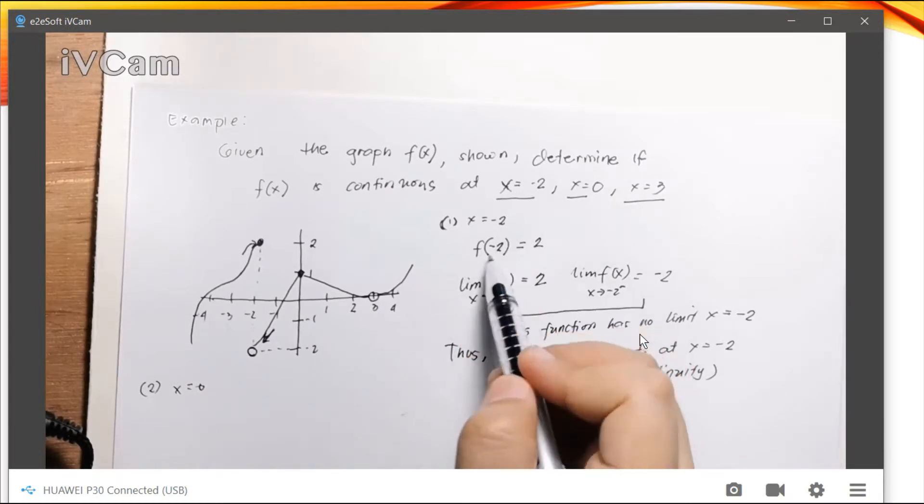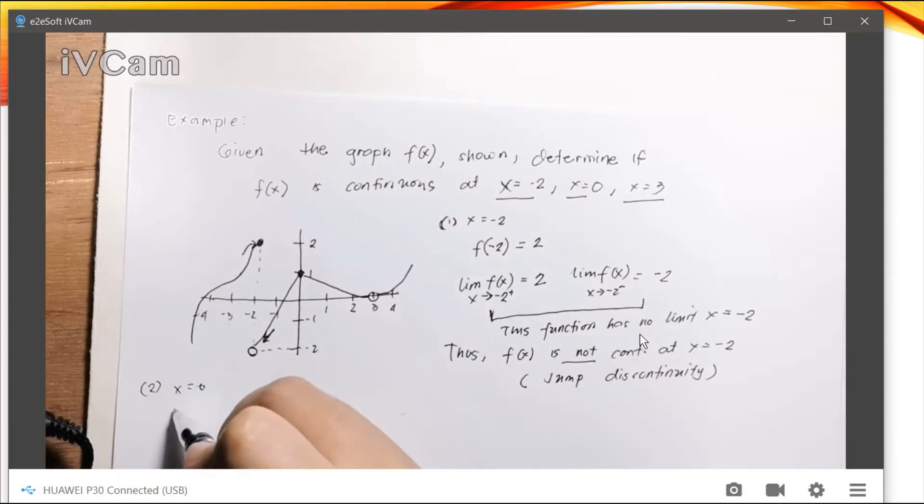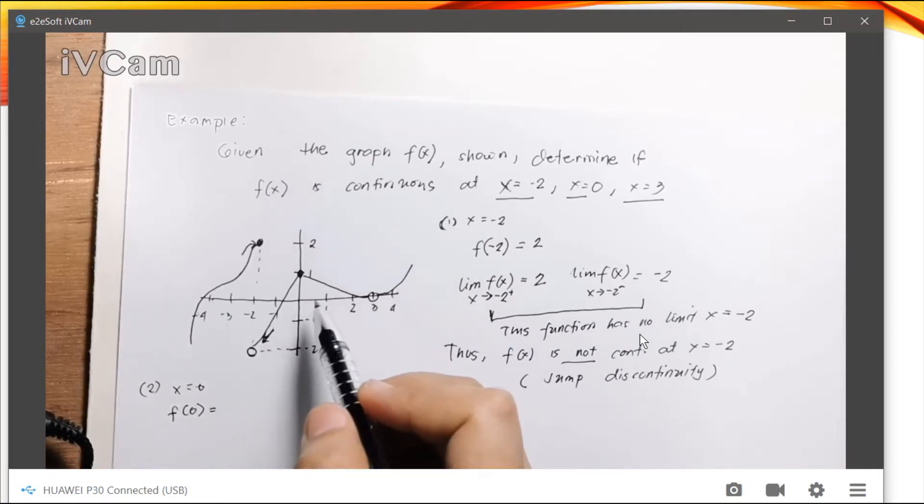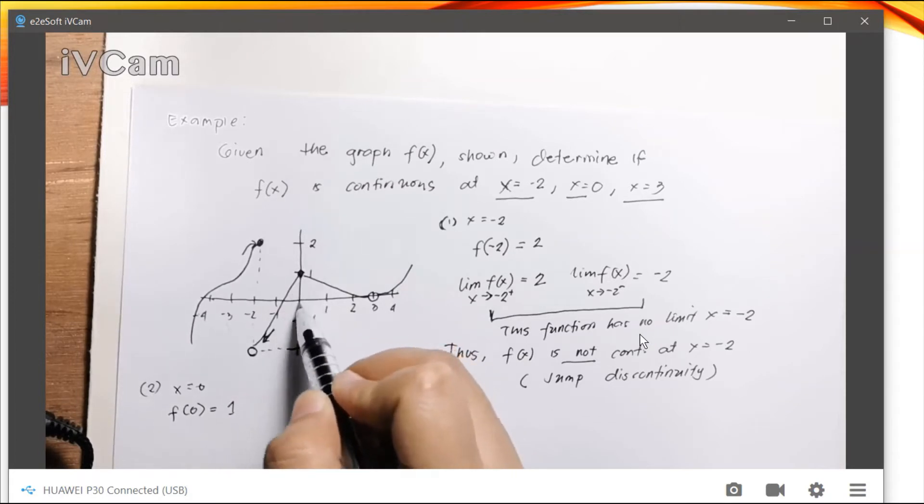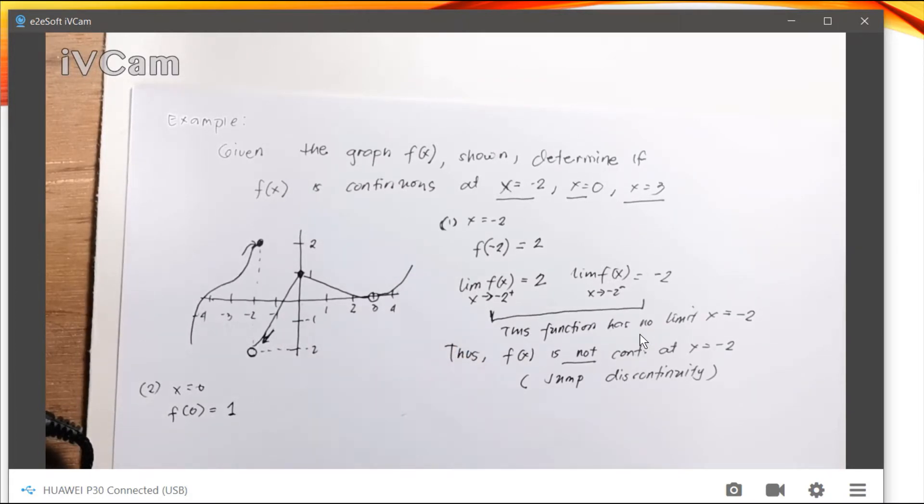So first, again, let's determine if our x is 0 at the function, what is the value? It is 1, right? So we found it. It is 1.